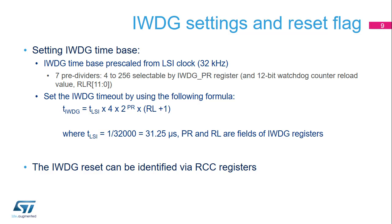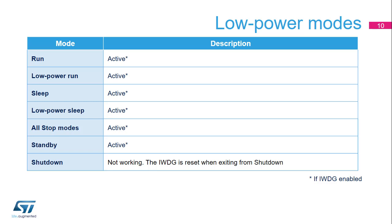Note that the reset and clock controller, or RCC, of the product provides registers giving the source of the reset. In that way, the application can check if a reset is caused by an independent watchdog. The IWDG can be active in all modes, except in shutdown mode. When the product exits from shutdown, the IWDG registers are set to their initial values.